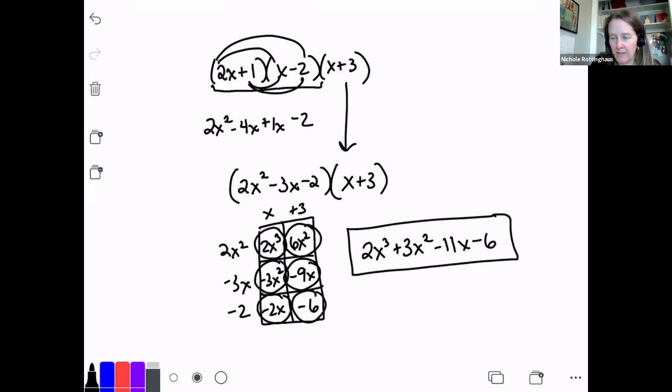So when you have three binomials, you just have to multiply two of them together, get your trinomial, and then multiply it times the third one. Let's do one more.